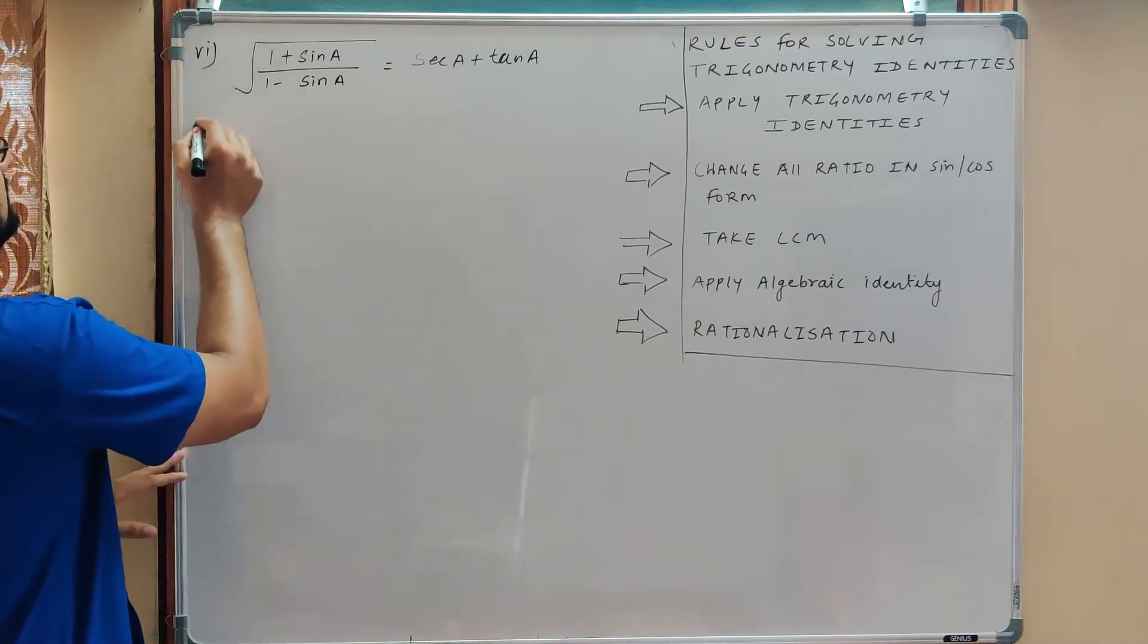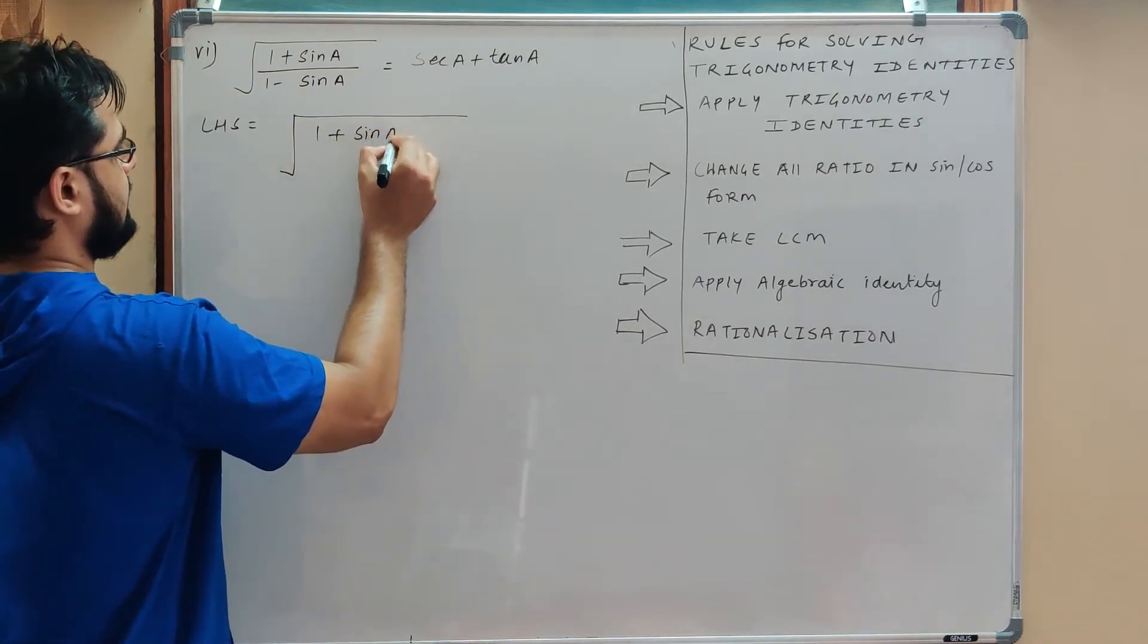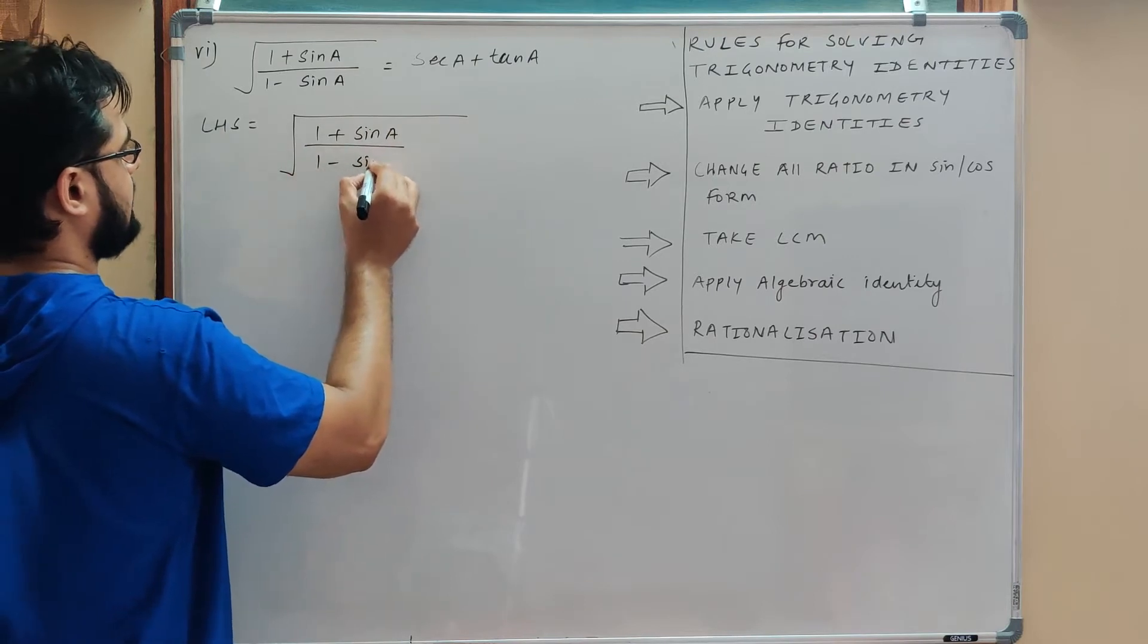Now how to prove? First of all, we will take left hand side. That is root 1 plus sine A upon 1 minus sine A.